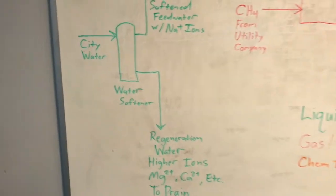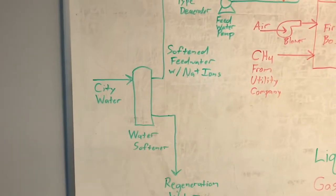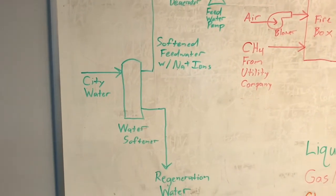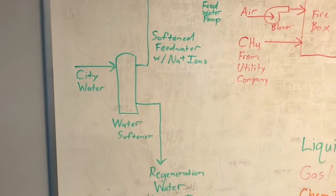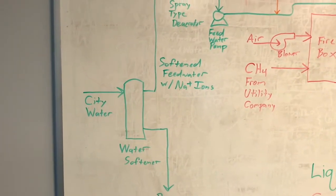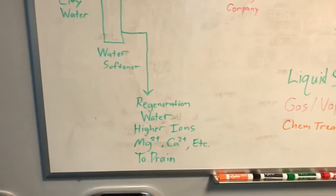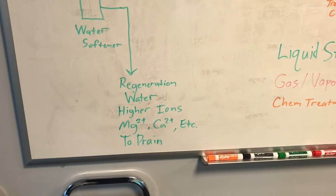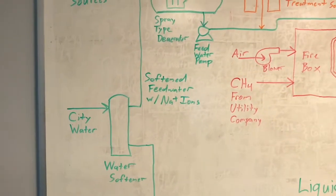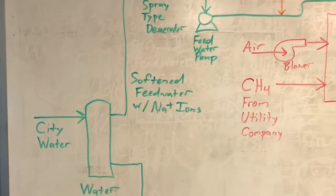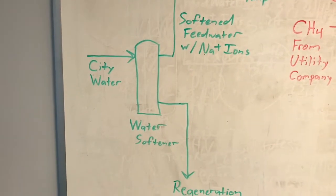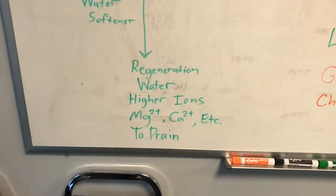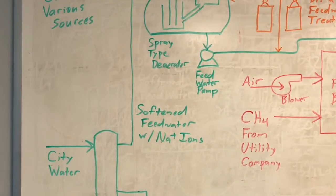It all starts with the feed water. We get city water from the city of Lock Haven, and it goes through a water softener system. The purpose of a water softener is to substitute the heavier ions that come in with the city water — such as magnesium and calcium, which cause scaling issues in boilers — and replace them with softened sodium ions. This goes through a regeneration purge cycle with a salt brine solution, which displaces these ions and moves the softened water through.